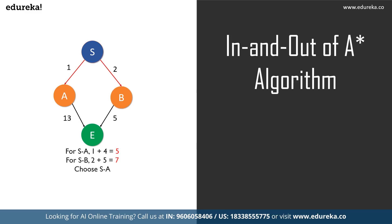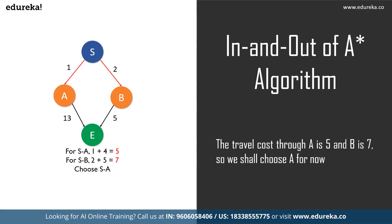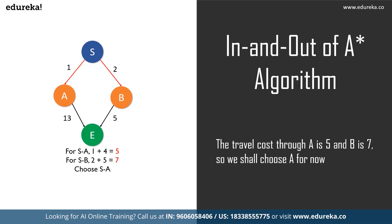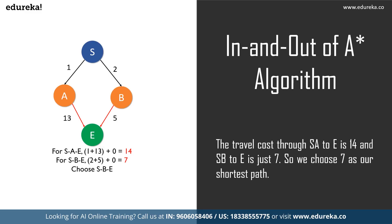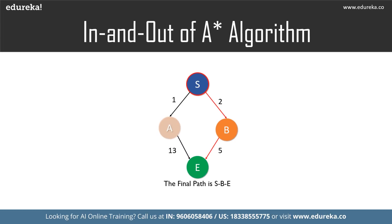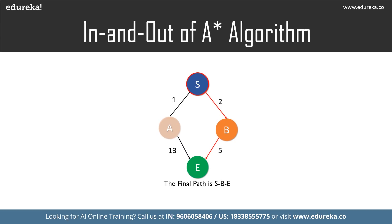Moving on, the paths from S are the other two vertices. The cost of S to A is 1 + 4 = 5, and the cost for S to B is 2 + 5 = 7. So S to A is the shortest path, and we choose S → A. Moving on from A, the paths to the destination are calculated: the total for path S→A→E comes to 14, and the path for S→B→E comes to 7. We choose path S→B→E as it is the shorter one, and we have reached our destination. That is how the formula finds the optimal path.